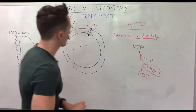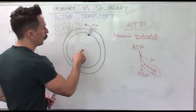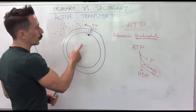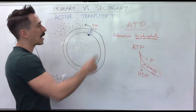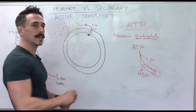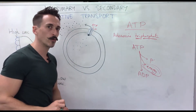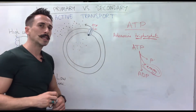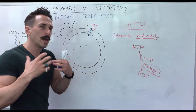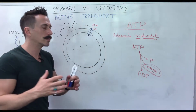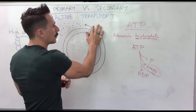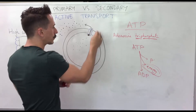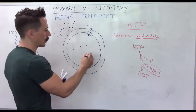Sometimes a solute that wants to go outside can't use ATP as its energy substrate directly, so it needs to use energy from elsewhere. Sometimes there is another solute inside the cell.